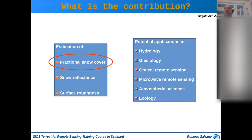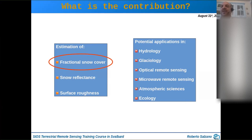The main contribution of this approach is the estimation of fractional snow cover. This is an important essential variable useful for hydrological purposes, glaciological purposes, optical remote sensing, and potentially also for microwave remote sensing, atmospheric sciences, and ecology.